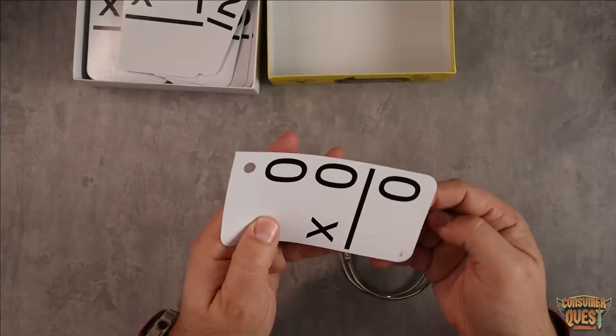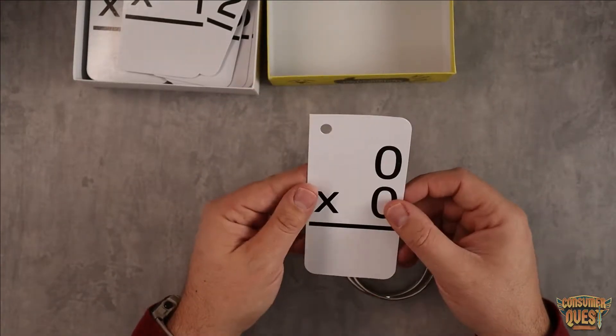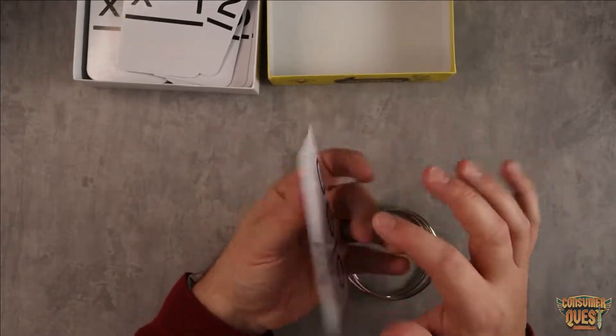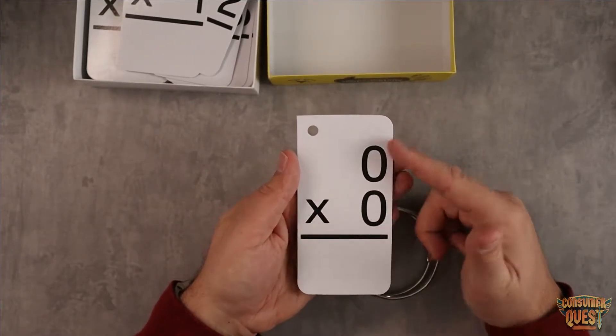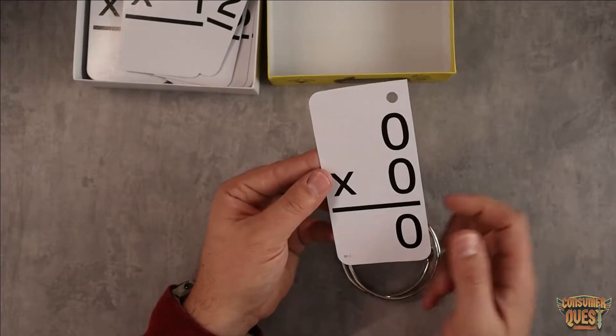They're not necessarily card stock but they're pretty thick. It's great because they have everything on both sides - they have the multiplication which is stacked, and then on the back you don't just get the answer.